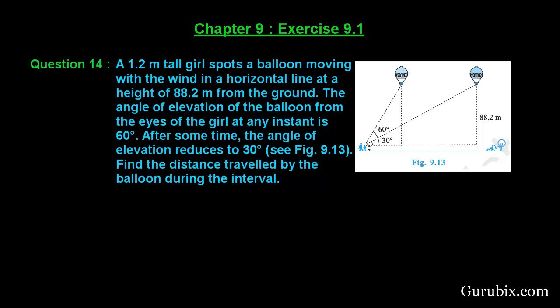Welcome friends. Let us solve question number 14 of Exercise 9.1 of Chapter 9. The question states: a 1.2 meter tall girl spots a balloon moving with the wind in a horizontal line at a height of 88.2 meters from the ground. The angle of elevation of the balloon from the eyes of the girl at any instant is 60 degrees. After some time the angle of elevation reduces to 30 degrees. Find the distance traveled by the balloon during the interval.